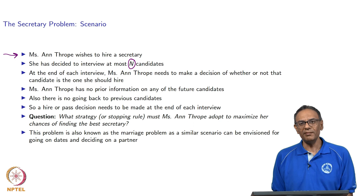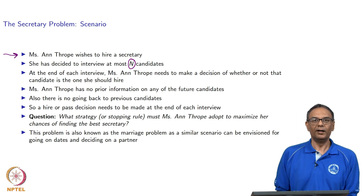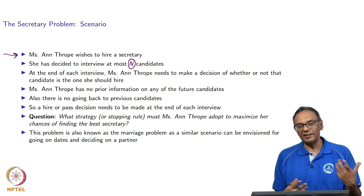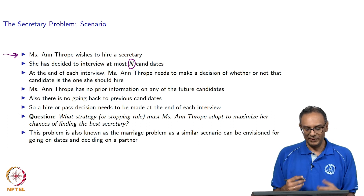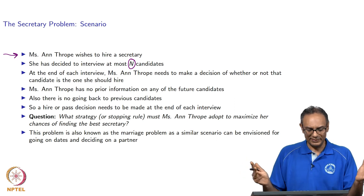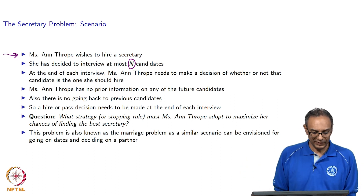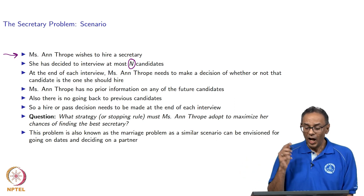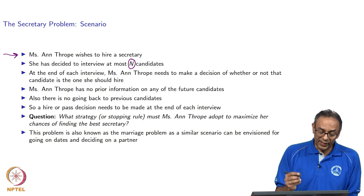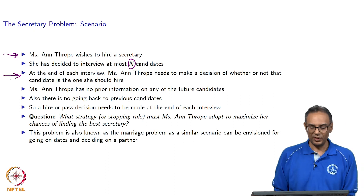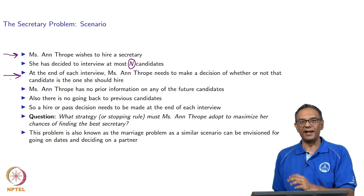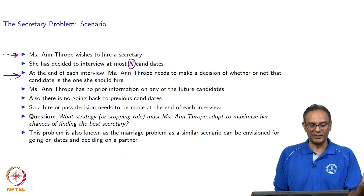Miss Anne Thrope wants to hire a secretary and she decided to interview a maximum of n candidates — a reasonably large number, not 1 or 2. However, there is a key difference from what we normally do. Normally, we interview all our candidates and then pick the best one. That is not what we are doing in this problem. This problem is specially created for a different situation.